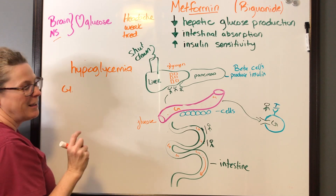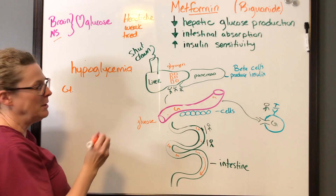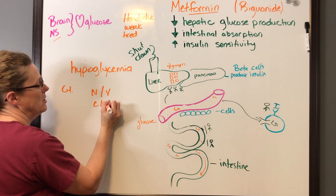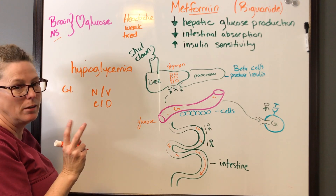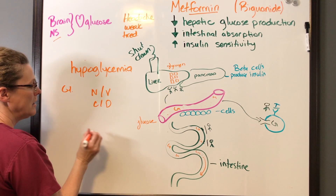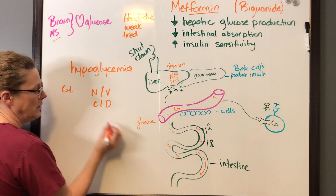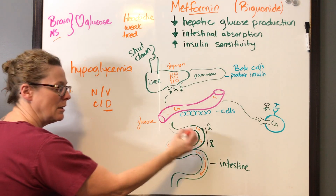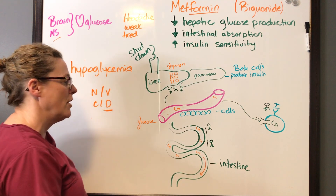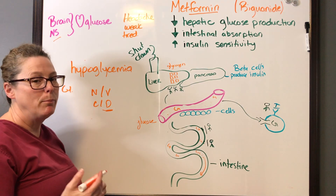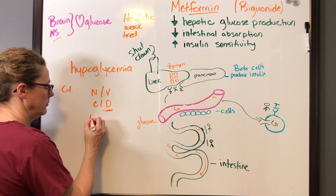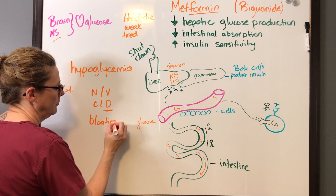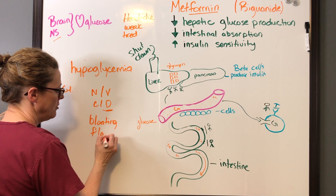Coming down to the GI system — anything I put into my stomach: nausea, vomiting, constipation, diarrhea. Those are common side effects. But because of that sugar, it's more likely to be on the diarrhea side if I'm excreting all of that sugar. I also have some bloating and gas/flatulence.